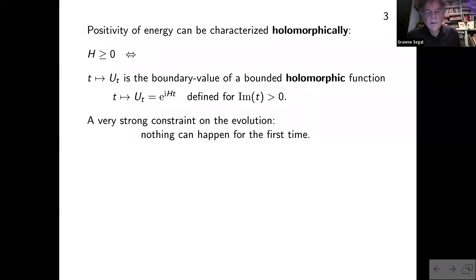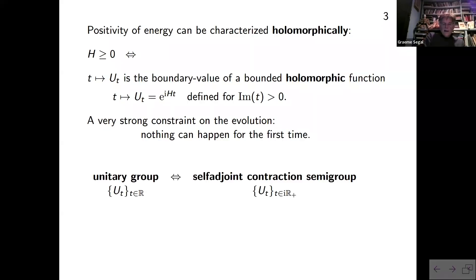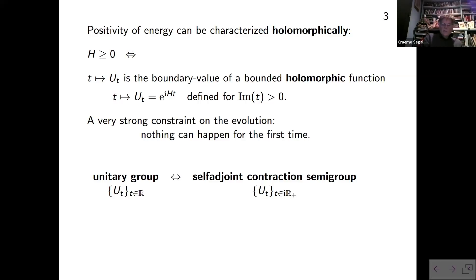This is a very strong constraint on the evolution — it tells you that if nothing has happened in the last ten minutes, it's not going to happen at all. We have a relation between the unitary group and a semi-group parametrized by the imaginary axis — a contraction semi-group of contraction operators. These two things define each other, and the passage from one to the other is roughly speaking what's called Wick rotation.